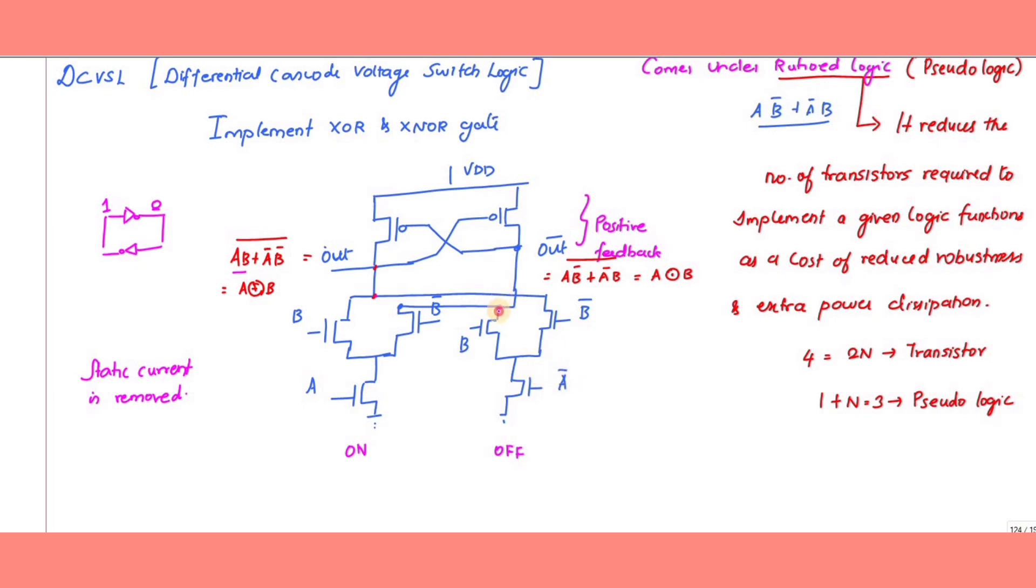On the complementary side, connect A-bar·B in series, which is in parallel with A·B-bar. Adding these and taking the complement gives (A-bar·B + A·B-bar)-bar, which is A XNOR B.